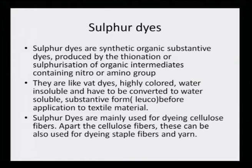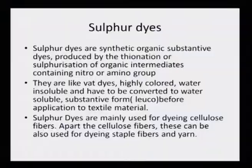Like vat dyes, sulphur dyes are highly colored, water insoluble, and have to be converted to a water soluble substantive form — the leuco form — before application to textile material. Vat dyeing also goes through similar processing: vat dyes are insoluble, then solubilized into leuco form which is almost colorless, and in that solubilized form they penetrate into the fabric and are regenerated into the insoluble form. Similarly, sulphur dyes behave in the same manner and are mainly used for dyeing cellulose fibers, as well as staple fibers and yarns.